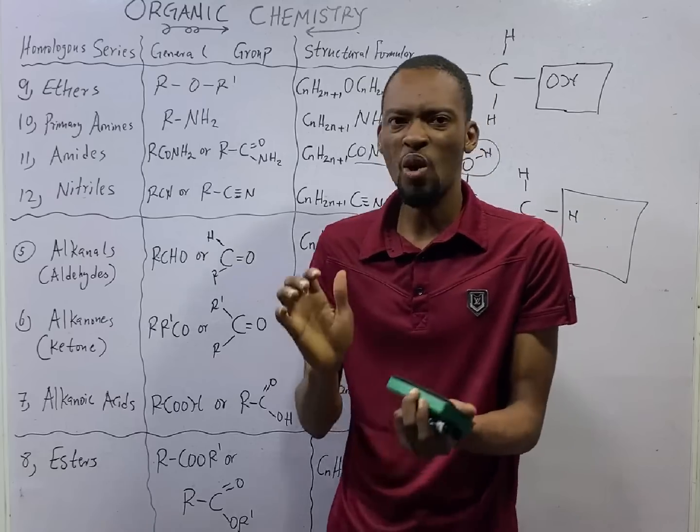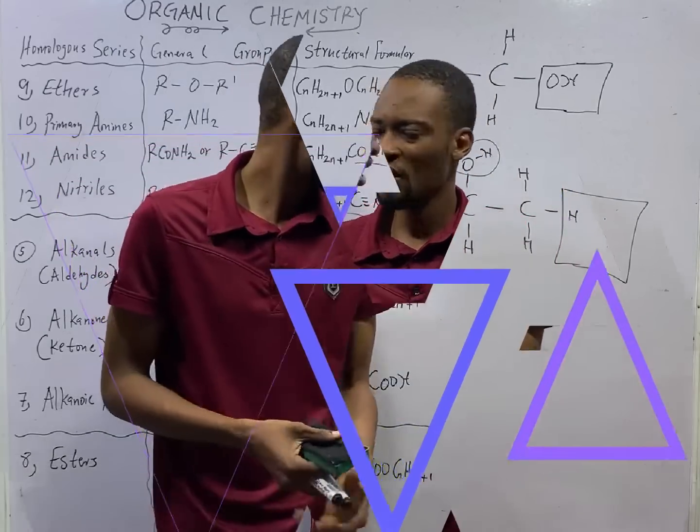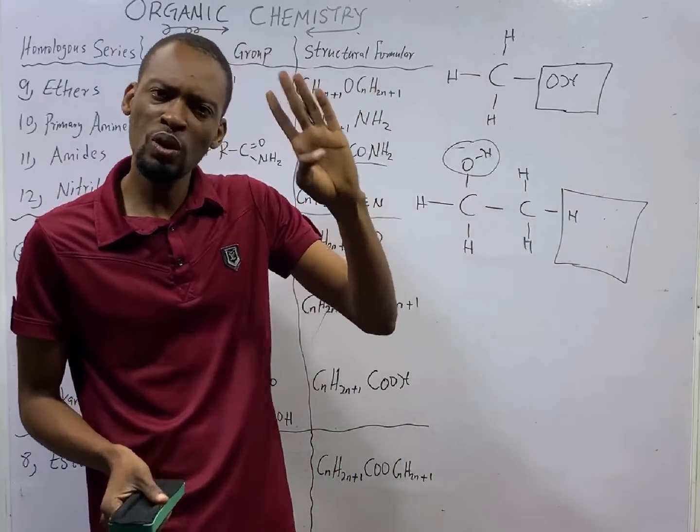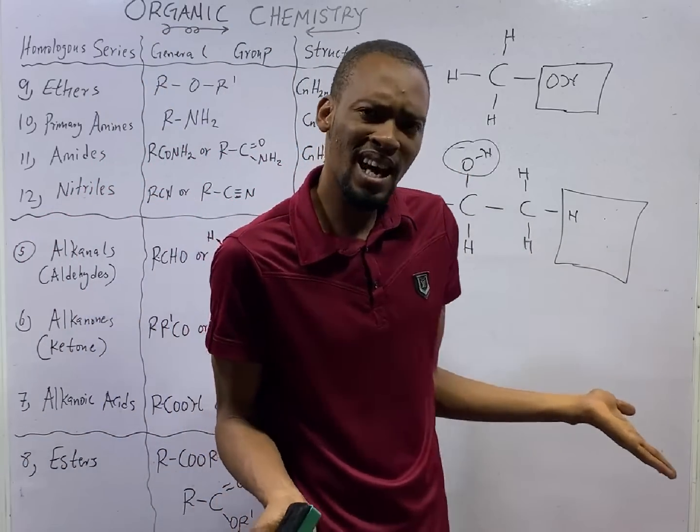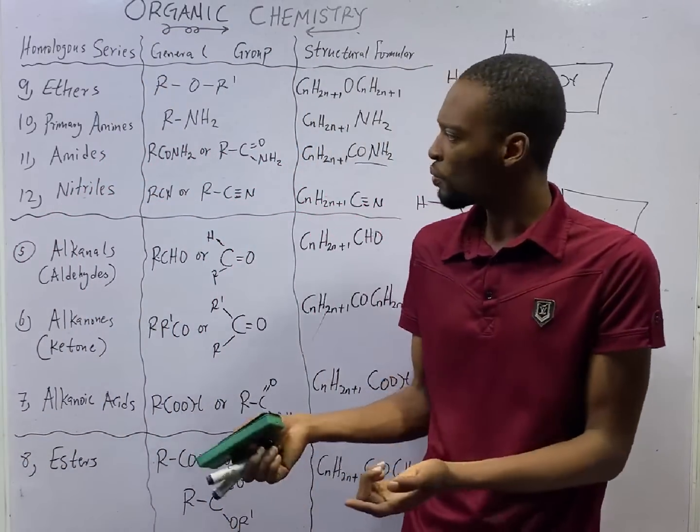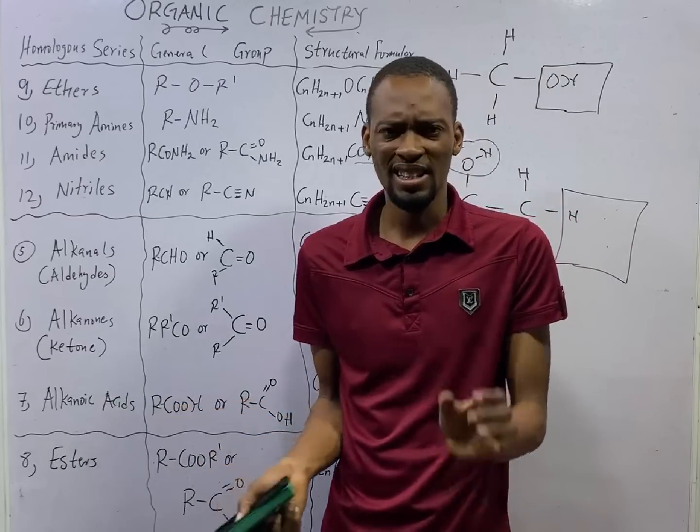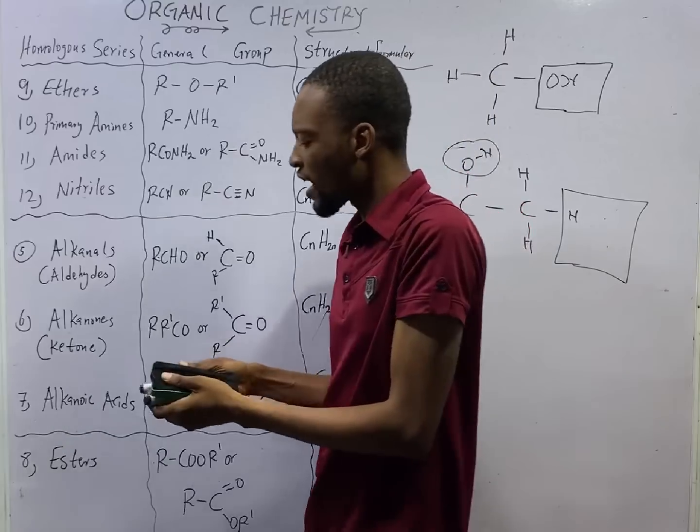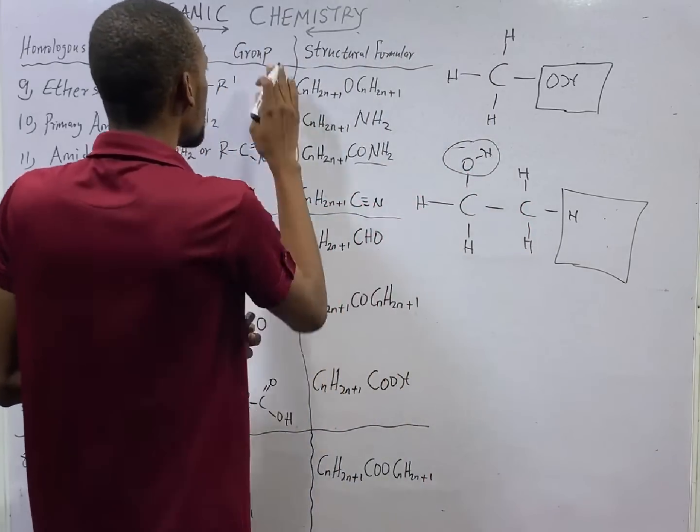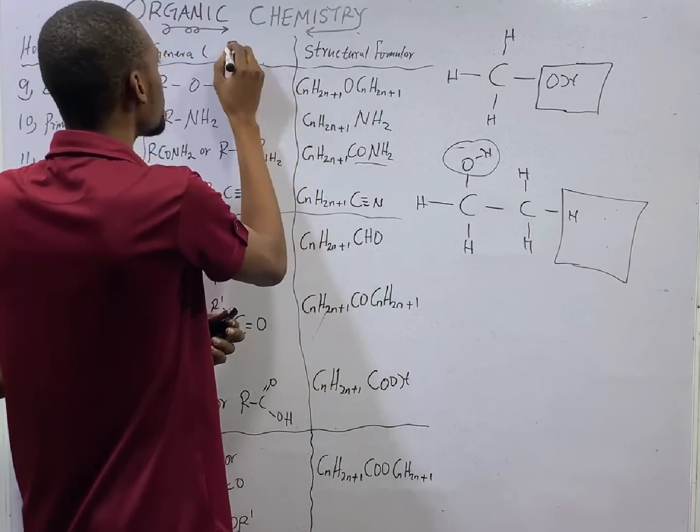In this episode, we shall continue from where we stopped. In the previous episode, we looked at the alkanes and we said that alkanes are characterized by single bonds. We looked at alkanes, the general formula of alkanes and the structural formula. This is general formula.